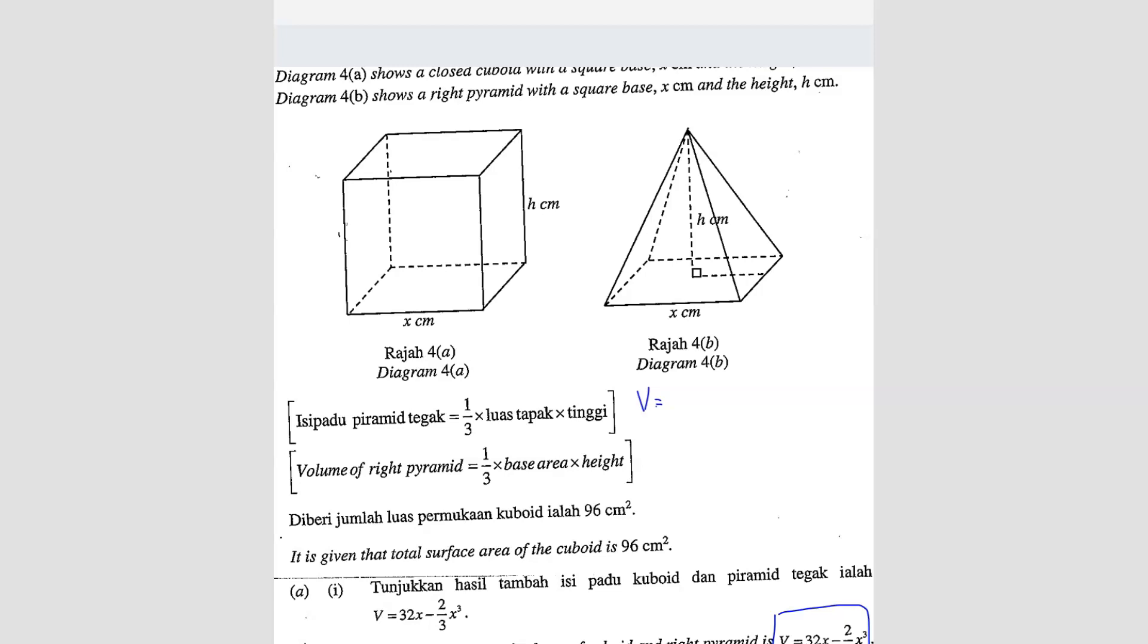The first shape is cuboid, so it's x length times width times height, which is x² times h because it's also a square base. And then plus this one, which is a pyramid. So 1/3 times the base area. Base area is also square base, so it's x². So here it will be x² times the height.